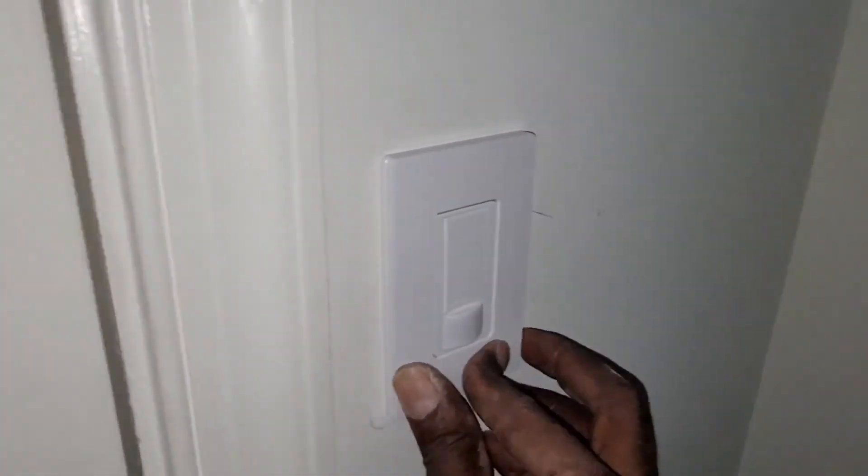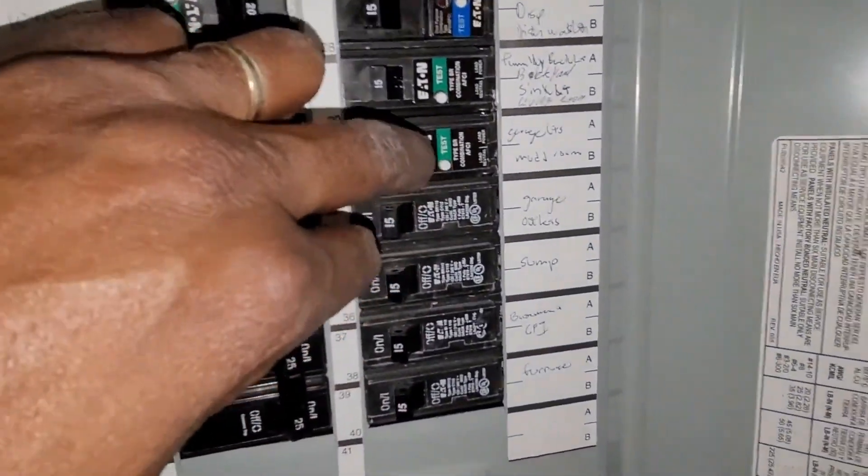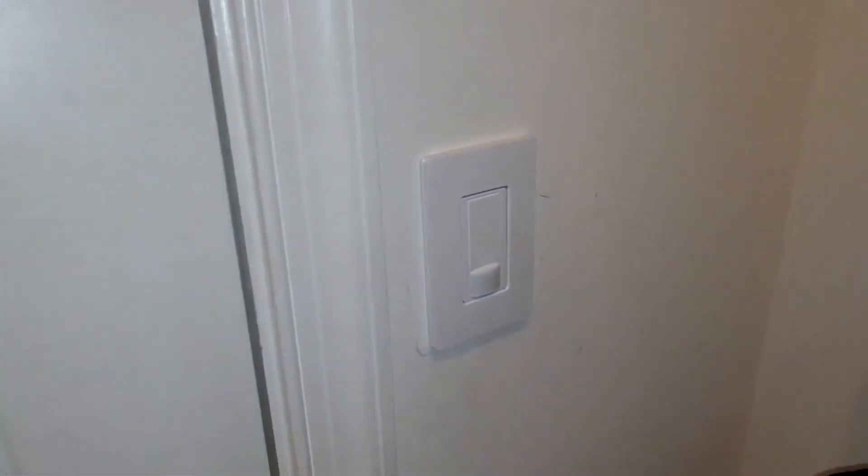Push it back, and here we go. Now let's turn back the breaker and see. There you go, we have light back here and the sensor is working. If you push, it turns off. Push again, it turns back on. That's about it. Thank you for watching, bye bye.